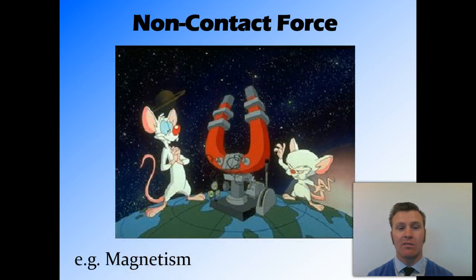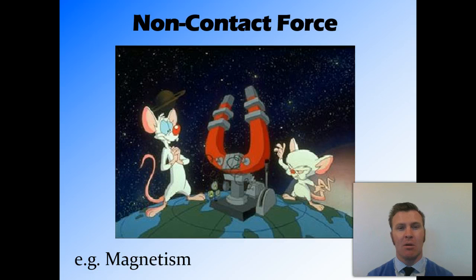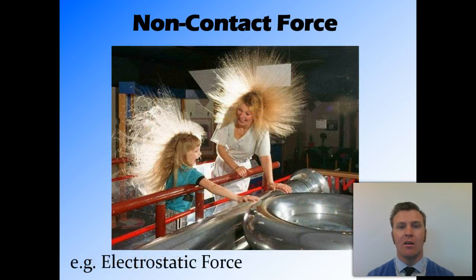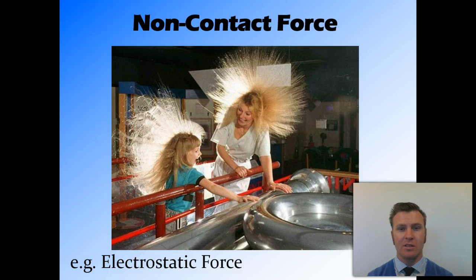Another non-contact force is magnetism. In magnetism, one magnet will pull another magnet or an induced magnet in a metal object, but these magnets don't need to be touching to exert that force. Finally, electrostatic force — it also exerts a field of influence, and that field of influence affects objects in its area.